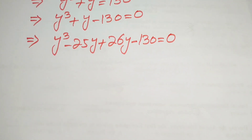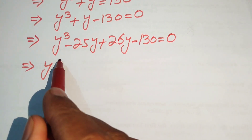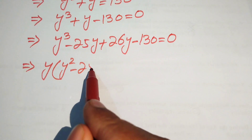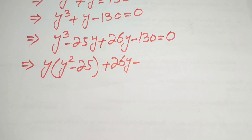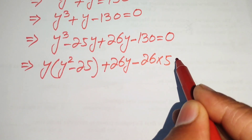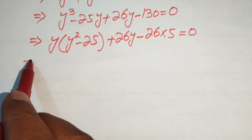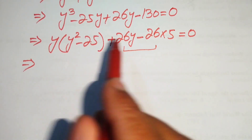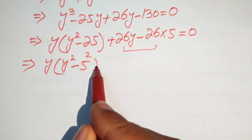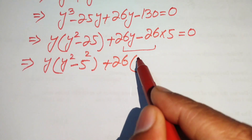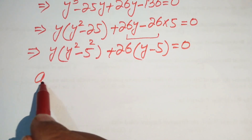Taking y common from the first two terms gives y times (y squared minus 25). We write 130 as 26 times 5, then take 26 common from the remaining terms, giving 26 times (y minus 5) equals zero.